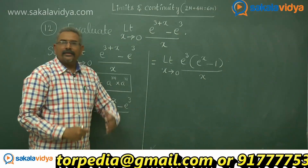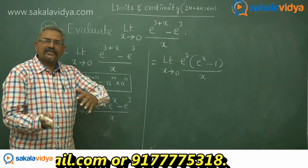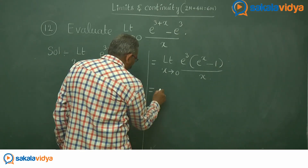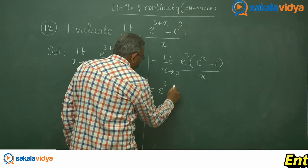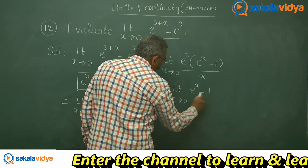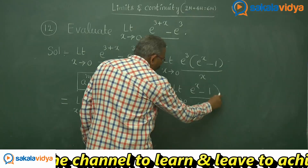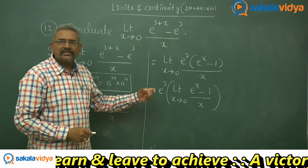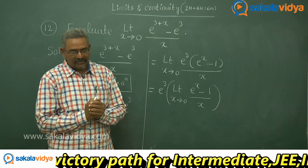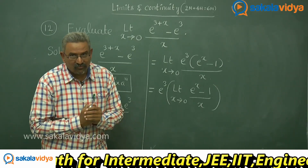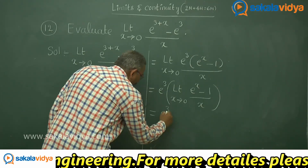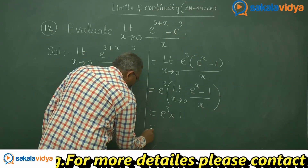Being e cube a constant, let us take it outside the limit. So we get e cube times limit x tends to 0, e power x minus 1 by x. Do you know the value of limit x tends to 0, e power x minus 1 by x? Yes. As it is one of the standard limits, we can write directly 1. So it is replaced by 1, and we get e cube times 1.